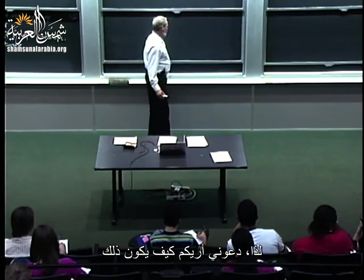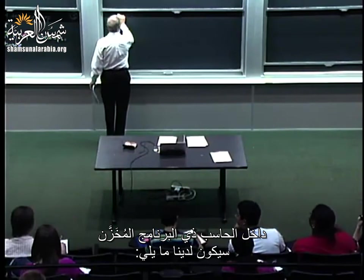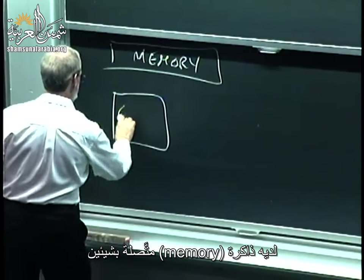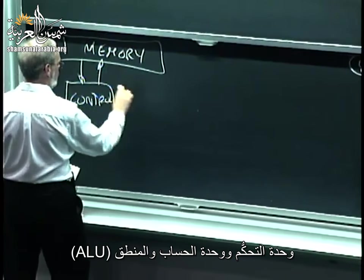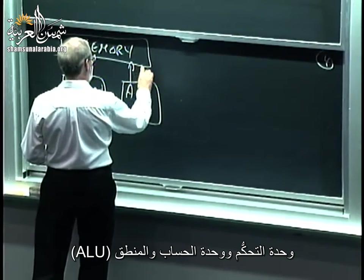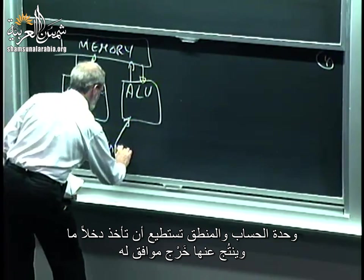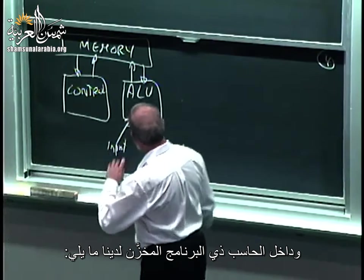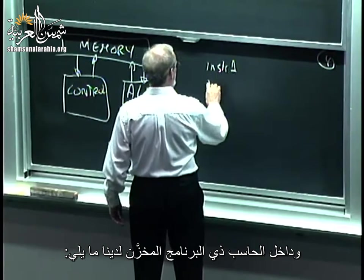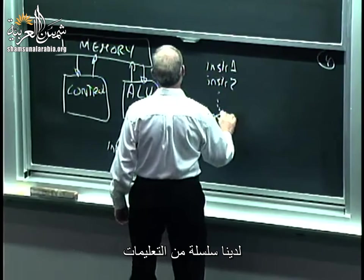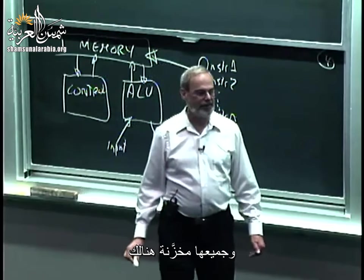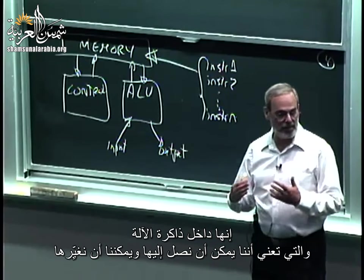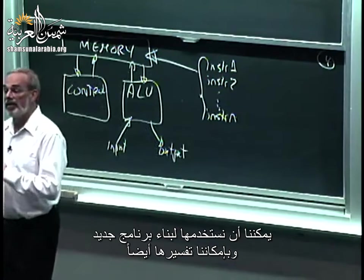Inside a stored program computer we have the following: a memory, connected to a control unit and an ALU — an arithmetic logic unit — which can take input and produce output. Inside this stored program computer you have a sequence of instructions that all get stored in memory. Notice the difference: the recipe, the sequence of instructions, is actually read in and treated just like data — it's inside the memory, which means we can access it, change it, and use it to build new pieces of code.